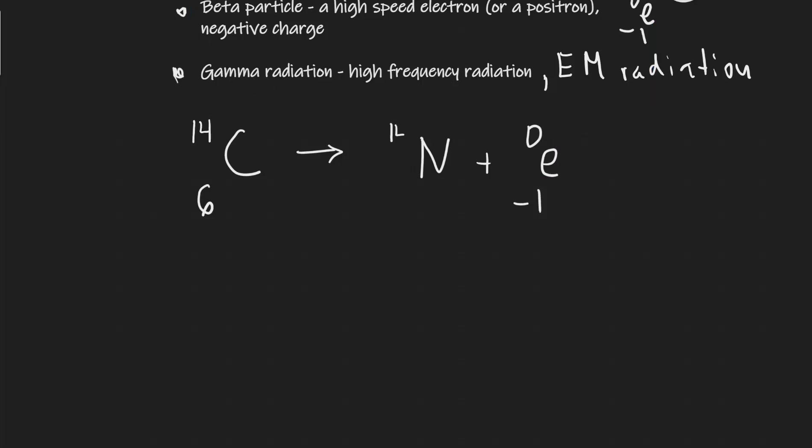So whatever this is plus zero has to give us 14. So this one here has got to be 14. Okay, so we have six across here and whatever number we have here take away one has got to give us six. So the only way this could happen is if this one here is seven. So just a quick check, we have a six overall here for the atomic number, seven take away one is equal to six. We've got 14 here, we've got 14 here, so this equation has been balanced.